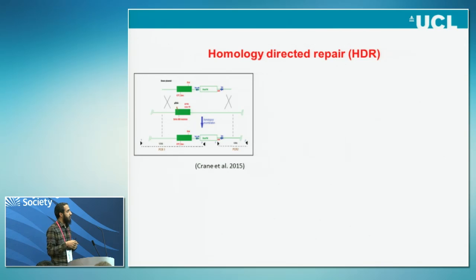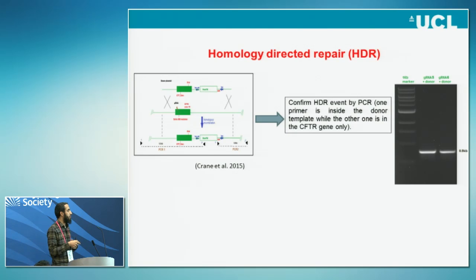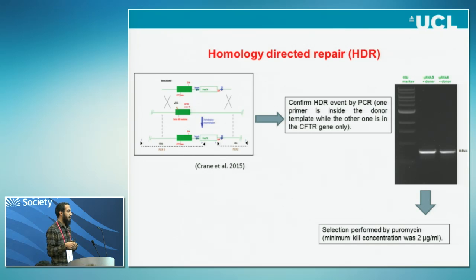Once we confirmed we were able to make non-homologous end joining and a double-strand break, we used homologous recombination. We used a donor template which has homology arms for CFTR and also has puromycin as a selection marker. The puromycin selection marker also has LoxP sites, so in the future we can use it to remove the selection marker. The minimum kill concentration for the CFB cells was around 2 micrograms per ml.